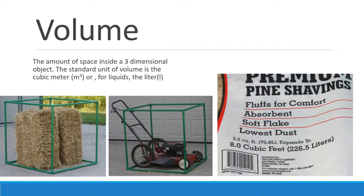Volume can be looked at two ways. For dry volume, the green squares we have are cubic meters. If you're familiar with being around a farm, two bales of straw fit comfortably into one cubic meter, and a lawnmower fits comfortably into a cubic meter as well. For those of you who like soda, liquids are often measured in liters — I'm sure you're familiar with what a two-liter bottle of soda looks like.